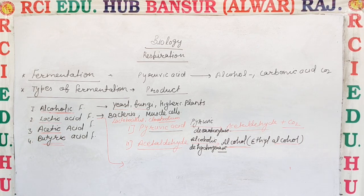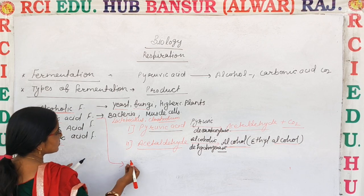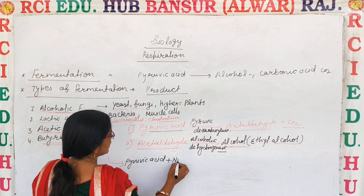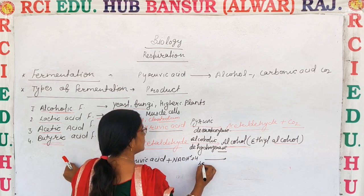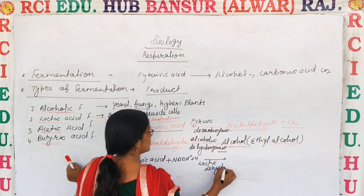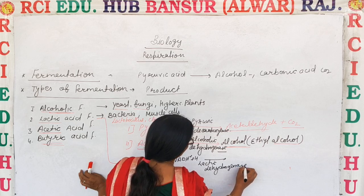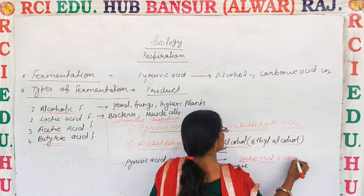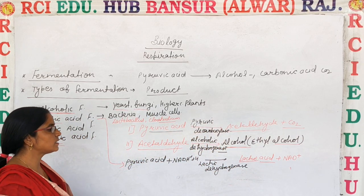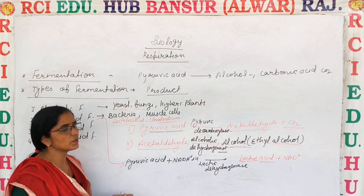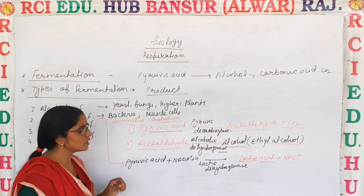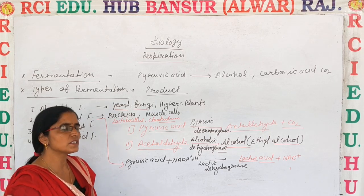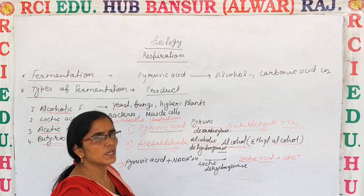In the lack of oxygen, with the enzyme lactic dehydrogenase, pyruvic acid is converted into lactic acid and NAD+. This is lactic acid fermentation — lactic acid is the product, produced along with NAD+.